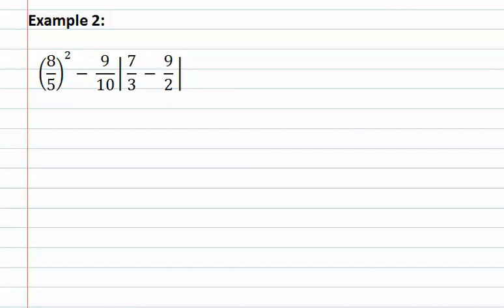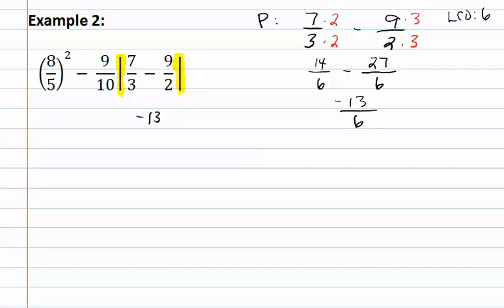Here is example two. Once again, we start with the order of operations, starting with P for parentheses. Remember, an absolute value counts as a parentheses, which means that this absolute value is actually acting as a parentheses. So, we must do what is inside first, which means we have seven-thirds minus nine-halves. Remember, we must have a common denominator if we add or subtract fractions. The least common denominator here is 6, which means we multiply the first by 2 and the second by 3, giving us 14 sixths minus 27 sixths. Now, we do the subtraction to give us negative 13 sixths, and we place this back inside the absolute value and bring everything else down.